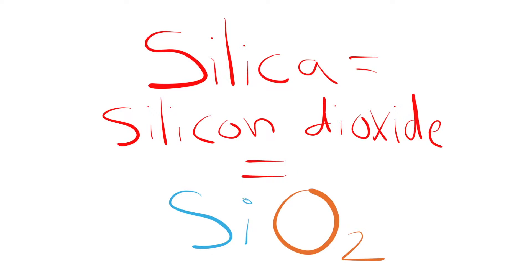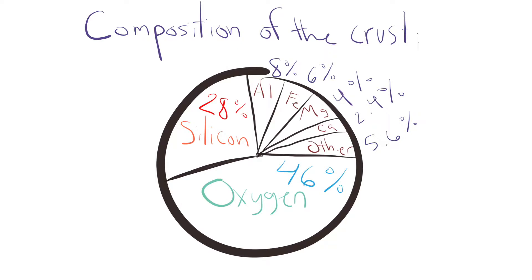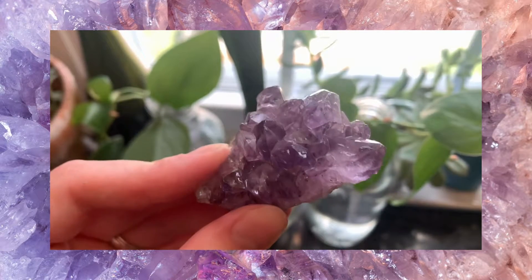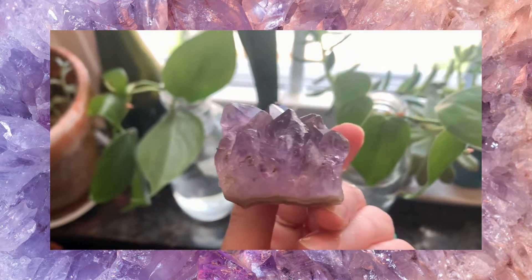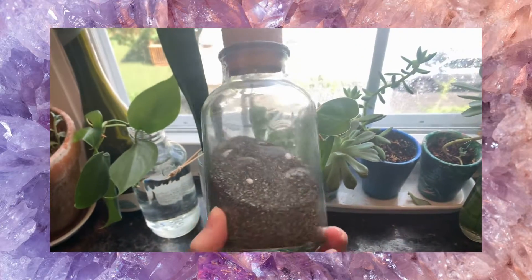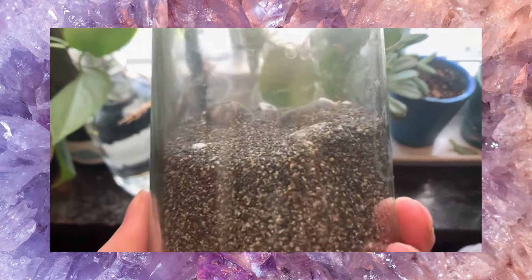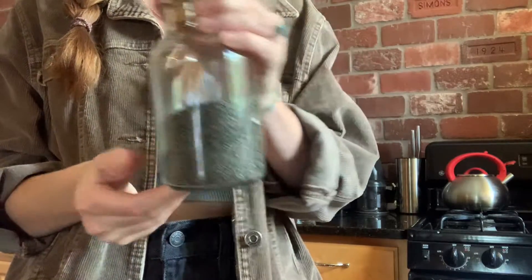Before getting into the different types of magma, I want to talk about silica — or silicon dioxide. Silica is the most abundant material in the earth's crust, made up of silicon and oxygen, which make up 46.6% and 27.7% of the earth's crust. The most well-known form of silica is quartz. The main ingredient of sand is actually quartz — so this sand in this jar, although it has other minerals in it, is mostly silica. The frames of my glasses are also made of silica.